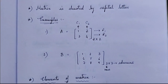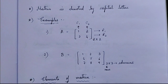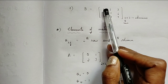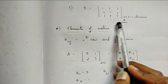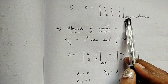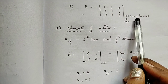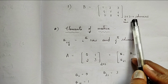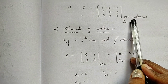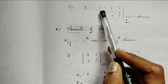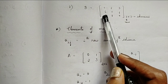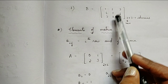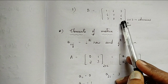Let us check one more example. This is the second example where the order of the matrix is 3 cross 3 — 3 is the number of rows cross number of columns. Number of rows: 1, 2, and 3. Columns: 1, 2, and 3.